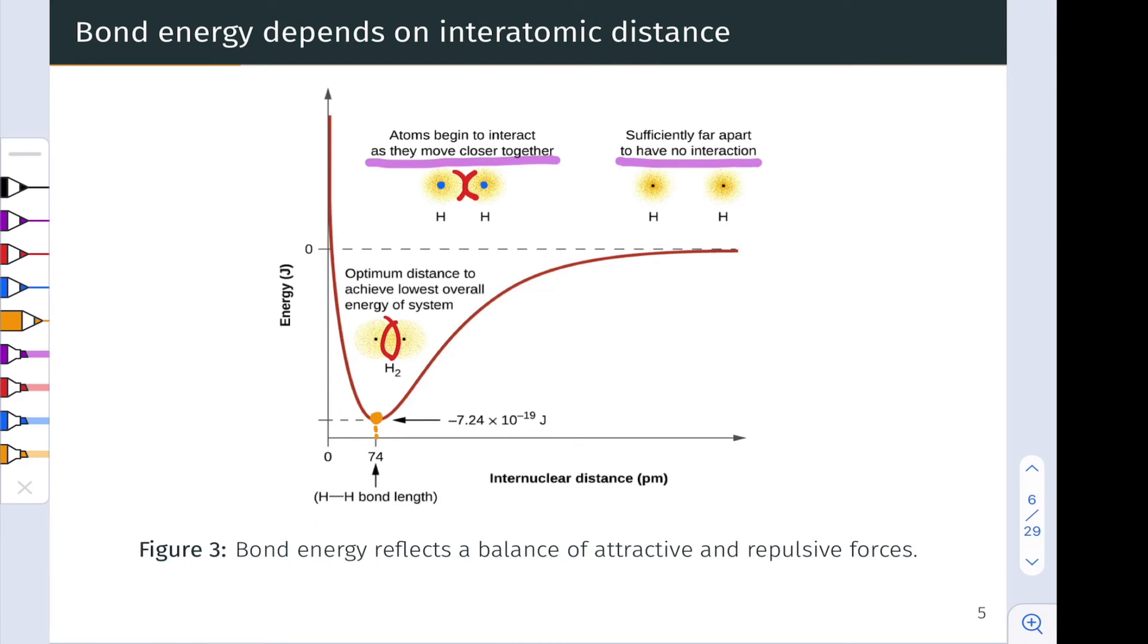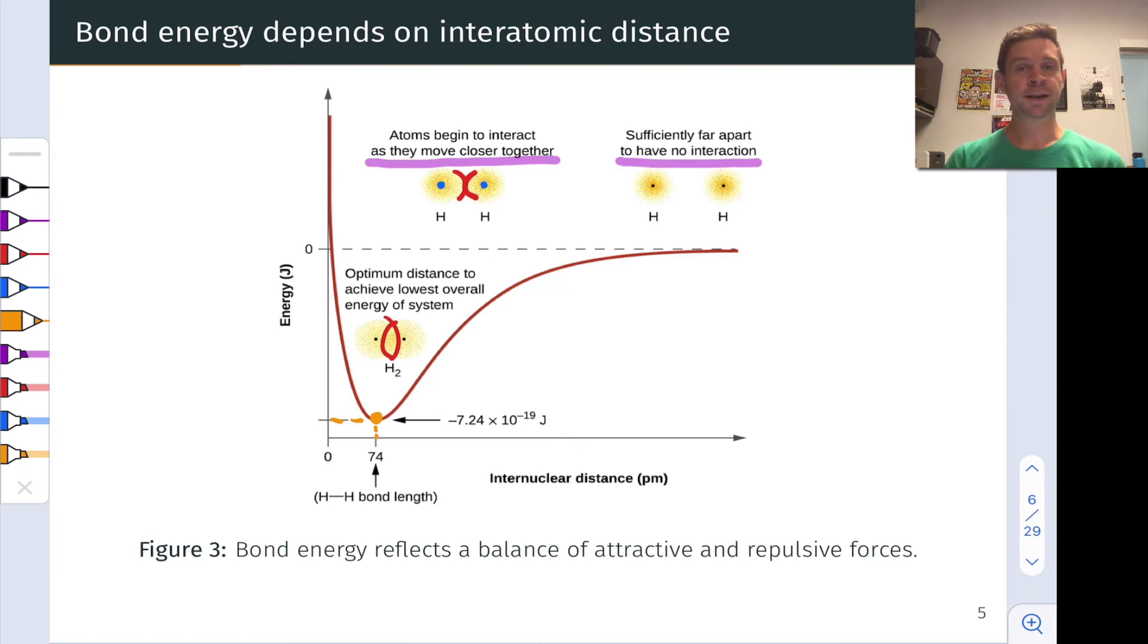This picture of the bond energy going down to a minimum and then back up is a very common and important one for covalent bonding, and the shape of this potential is known as the Lennard-Jones potential. This is a term that you may see in various resources online, and to learn more, this is absolutely a term that you can search for to learn more about this potential.